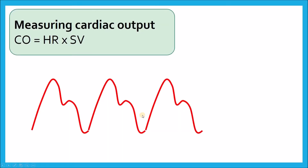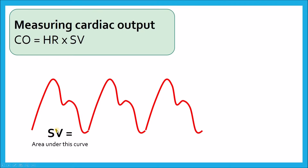So how do we measure cardiac output? First we have to understand what goes into cardiac output. Cardiac output is simply your heart rate times your stroke volume. The arterial tracing on an art line tells you a little bit about cardiac output. This curve from arterial tracing tells us what the stroke volume is. The curve is shaped based on two things: arterial tone, and the amount of blood coming out with each beat from the heart.